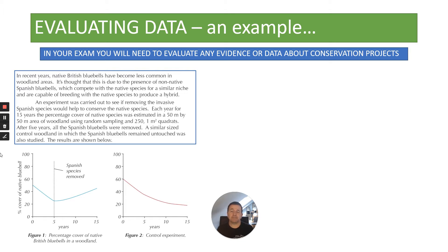In recent years native British bluebells have become less common in woodland areas. It's thought this is due to the presence of non-native Spanish bluebells which compete with the native species for a similar niche and are capable of breeding with the native species to produce a hybrid. An experiment was carried out to see if removing the invasive Spanish species would help to conserve the native species. Each year for 15 years the percentage cover of native species was estimated in a 50 by 50 meter area of woodland using random sampling and 250 one-meter-squared quadrats. After five years all the Spanish bluebells were removed, and a similar size control woodland in which the Spanish bluebells remained untouched was also studied.